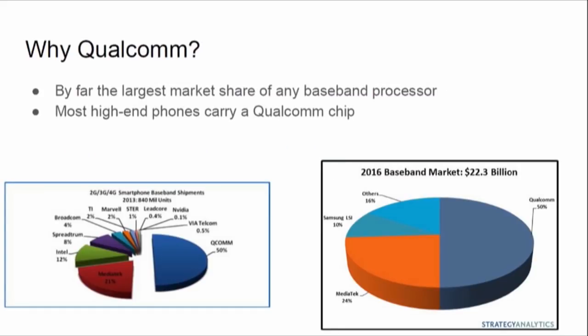I picked Qualcomm to focus on because they have by far the largest market share of the baseband market, and until recently most high-end phones carried a Qualcomm chip — all your Snapdragon processors in most high-end Androids. Huawei makes some of their own basebands and Samsung makes some with their Exynos chips. The main reason Qualcomm owns so much of the market is they were the big proponent of CDMA. AT&T is GSM and Verizon is CDMA, and Qualcomm has a death grip on all the CDMA patents in the United States. So if you want to sell a phone that does CDMA, you've got to stick a Qualcomm chip in it.